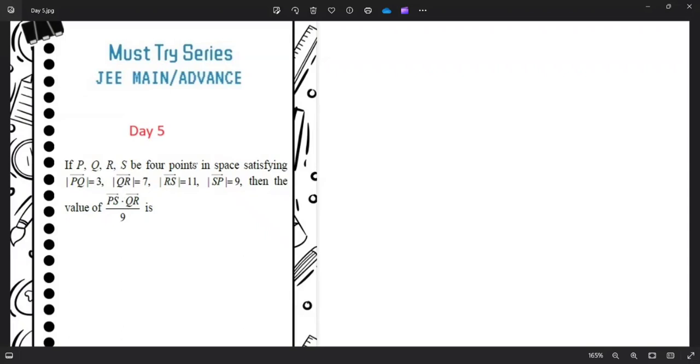We are asked to find the value of PS vector dot QR vector divided by k. Interestingly, by looking at four points in space, everyone is going to think PQRS is a quadrilateral.